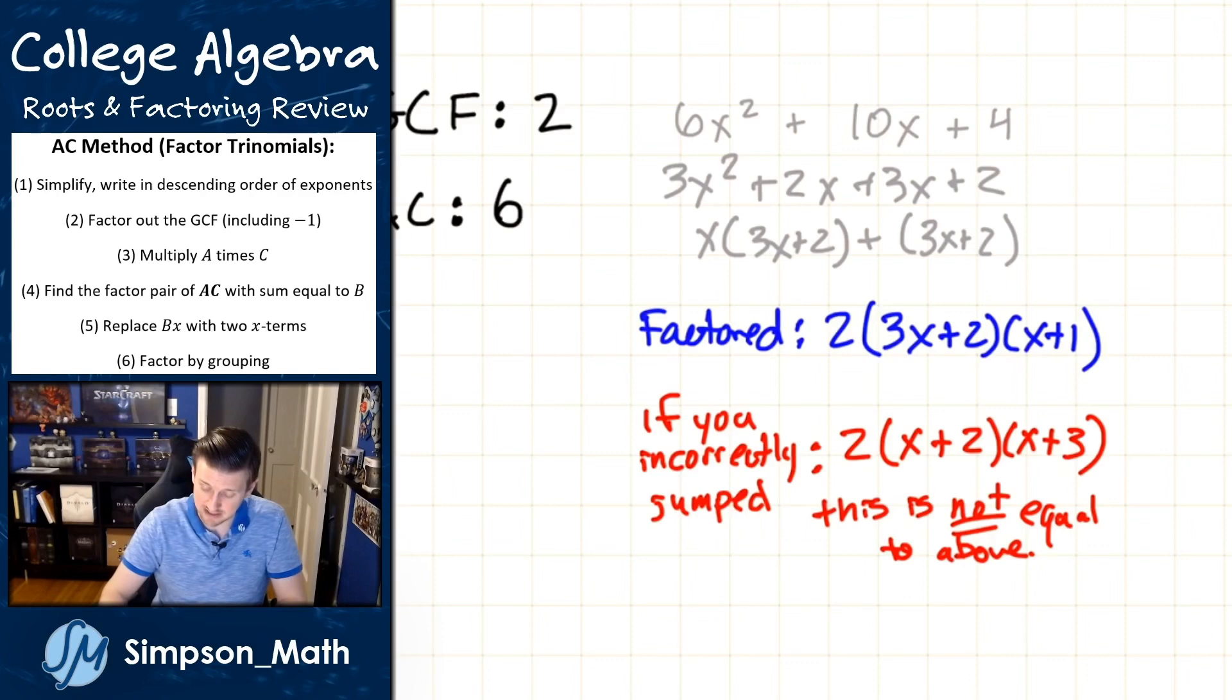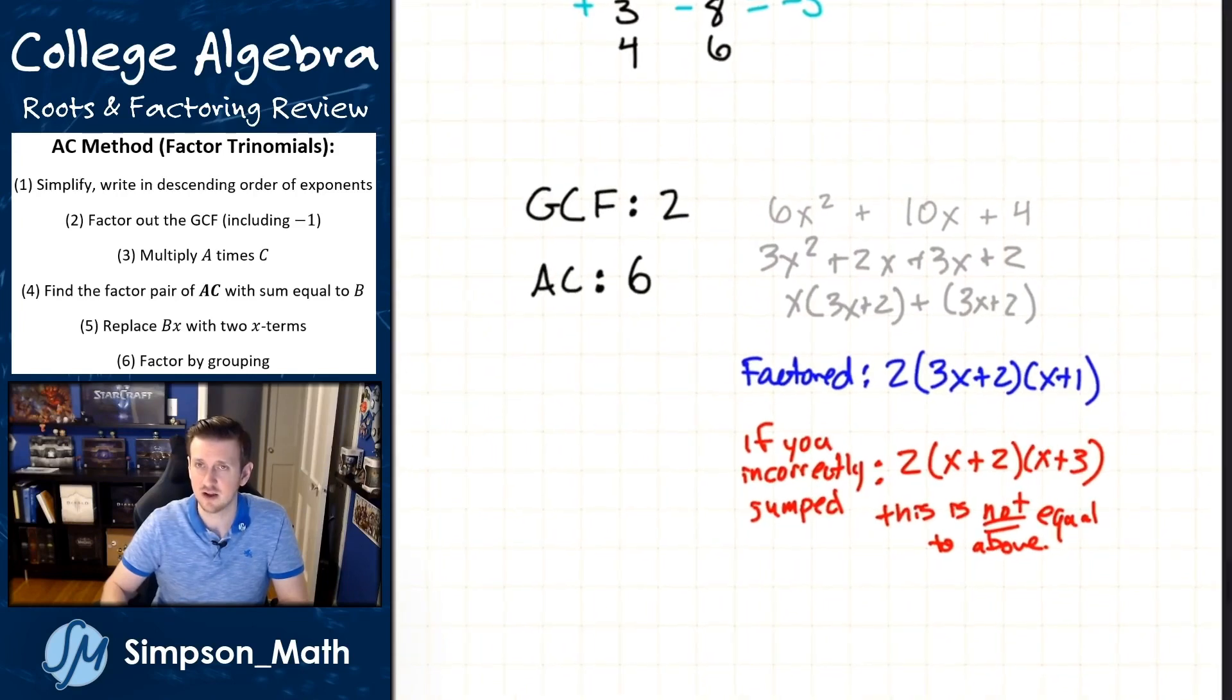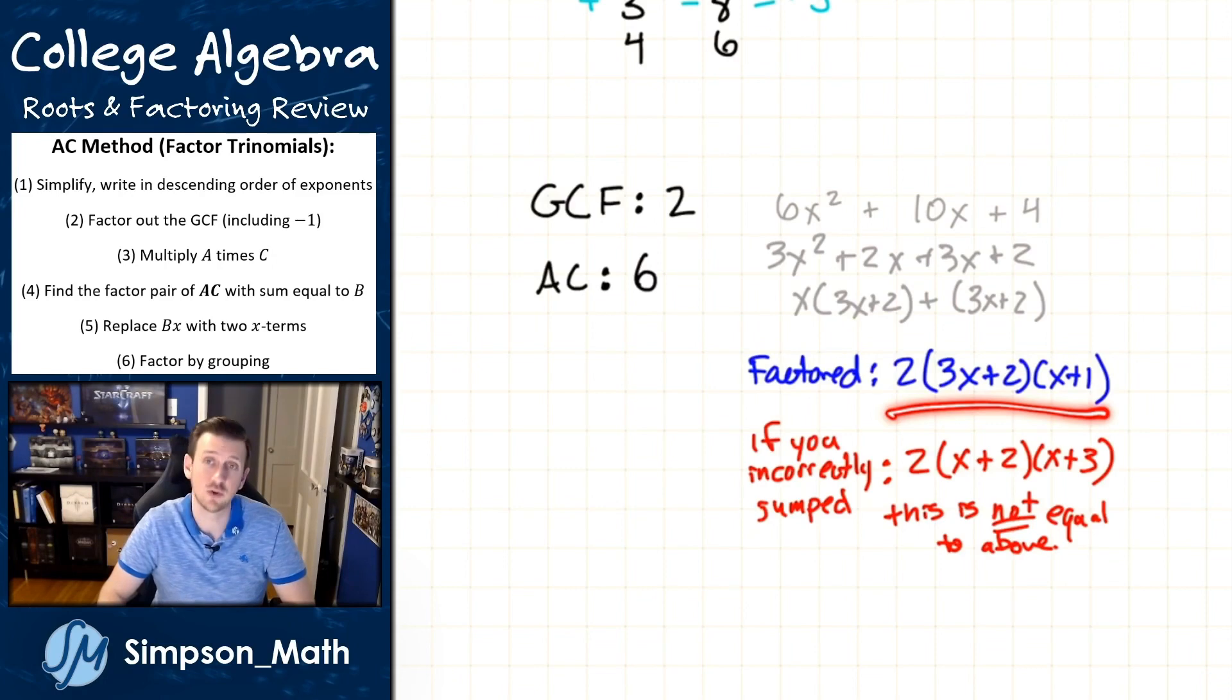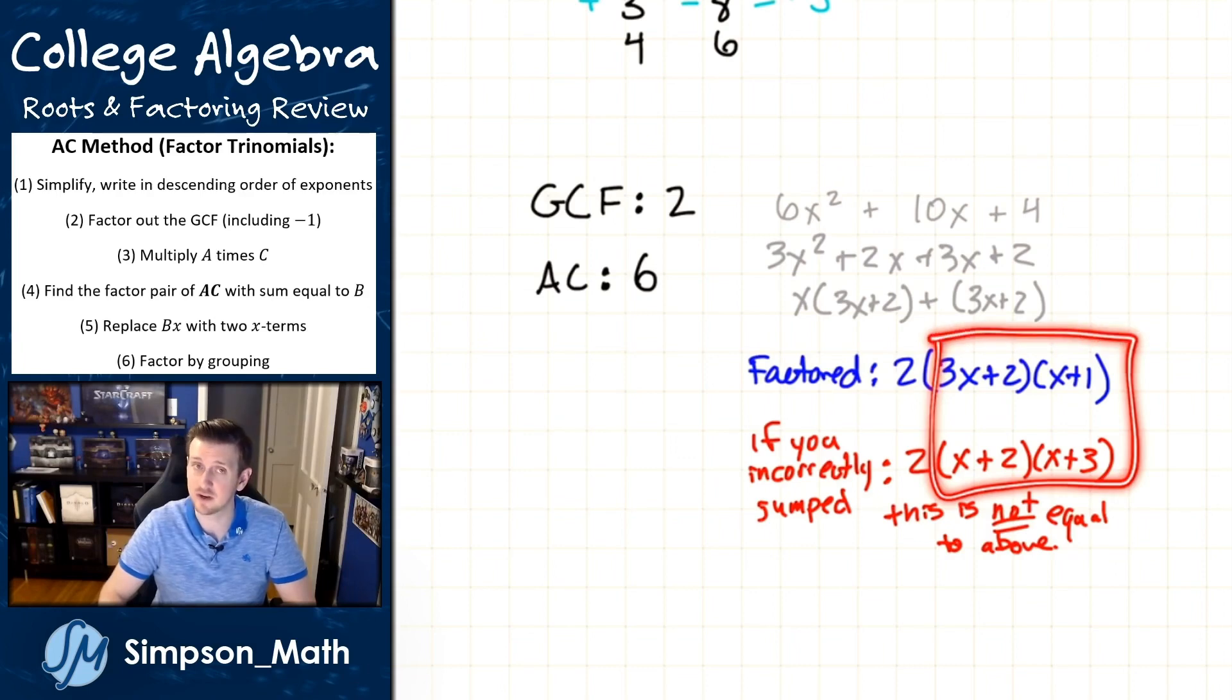If you did jump incorrectly, you would end up with 2(x + 2)(x + 3). That is very wrong. But if you were to do the full factored steps, you would end up with 2(3x + 2)(x + 1). Notice that these are very different, right?